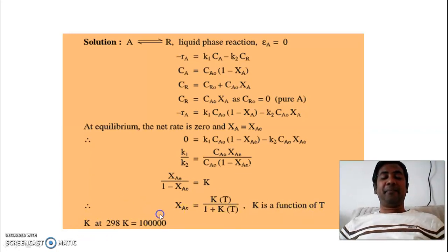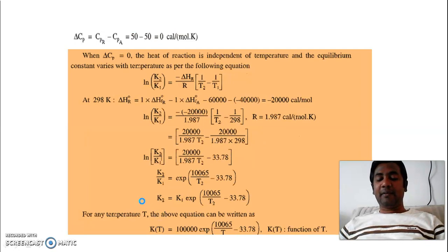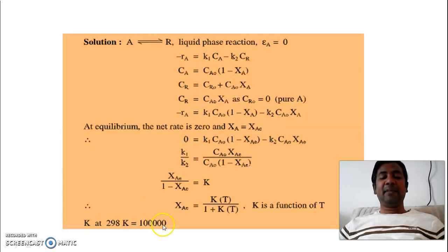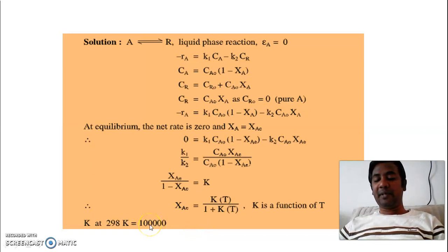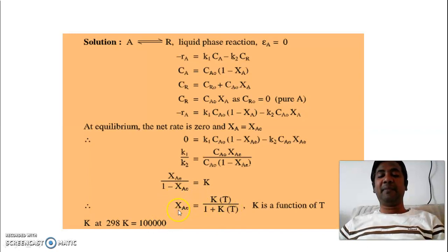So here we will use X_A in terms of K, and K is a function of temperature. So K at 298 Kelvin is given already, it is 100,000. We have to use this value in further calculation.